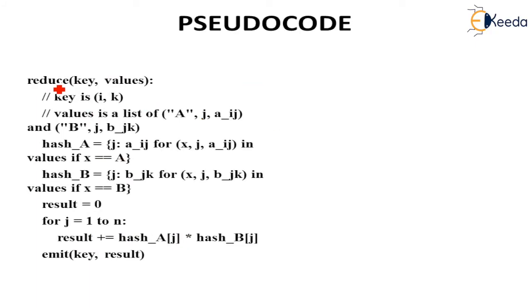Reducer will take the key values from the mapper where the key is I,K and the values are stored in hash maps. For A, a separate hash map is created, and for B, a separate hash map is created. It sets all those elements in those hash maps. We initialize the result to 0, and then for J equals 1 to N, result equals result plus hash_A[J] times hash_B[J]. Those hashes are multiplied to each other based on key value. At the end, we get the multiplication result in the form of key and result.